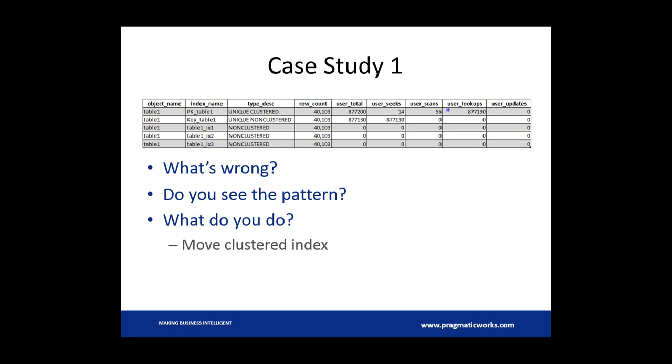What we saw here in this pattern was that there was 877,000 user seeks on one of the non-clustered indexes, but then there was also 877,000 lookups on that table.